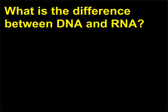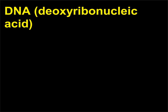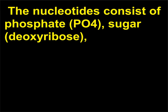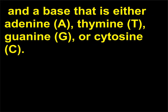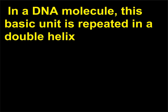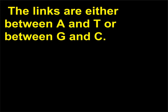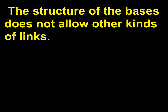What is the difference between DNA and RNA? DNA (deoxyribonucleic acid) is a nucleic acid formed from a repetition of simple building blocks called nucleotides. The nucleotides consist of phosphate, sugar (deoxyribose), and a base that is either adenine (A), thymine (T), guanine (G), or cytosine (C). In a DNA molecule, this basic unit is repeated in a double helix structure made from two chains of nucleotides linked between the bases — either between A and T, or between G and C. The structure of the bases does not allow other kinds of links. The famous double helix structure resembles a twisted ladder.